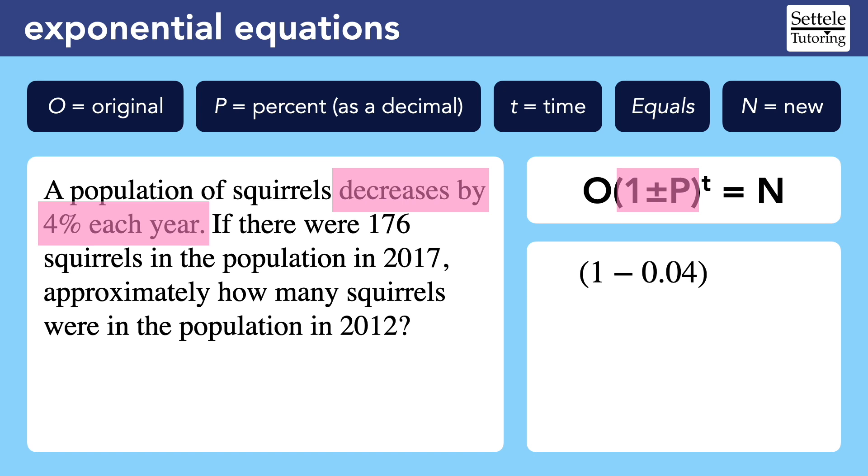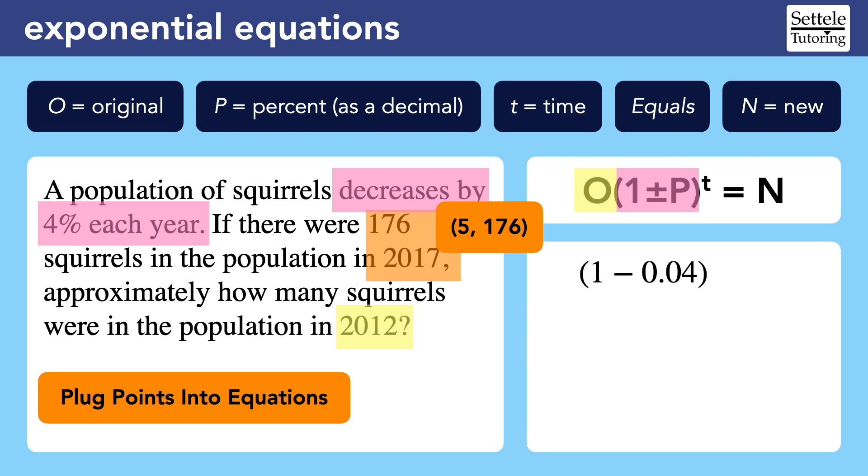If we start looking for the original value, we have a problem. We're told that the population is 176 in 2017, but that can't be the original value because we're not allowed to build equations that travel backward in time. This must be the new value, and we should see this as an opportunity to use the most important math strategy, plug points into equations.